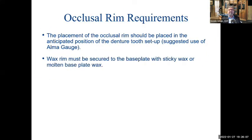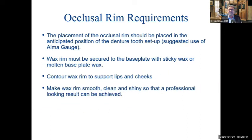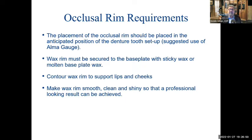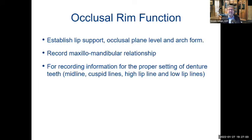The occlusal rim requirements include placing the rim in the anticipated position of the denture teeth. One tool I use is the Alma gauge — I place the pin in the papilla of the upper denture and come about 8 to 10 millimeters from the papilla; that's where we're going to set the denture teeth. When making the occlusal rim, I go about 8 to 10 millimeters from the papilla and secure and contour that wax rim so you don't have much work to do in the dental office. We want to establish lip support, the correct occlusal plane, and an arch form on the occlusal rim.